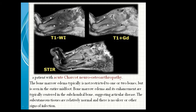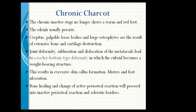The subcutaneous tissues are relatively normal and there is no ulcer or other signs of infection. Chronic Charcot: the chronic inactive stage no longer shows warm and red foot. The edema usually persists. Crepitus, palpable loose bodies, and large osteophytes are the result of extensive bone and cartilage destruction. Joint deformity, subluxation, and dislocation of the metatarsal head lead to a rocker bottom type of deformity in which the cuboid becomes a weight-bearing structure. This results in excessive skin callus formation, blisters, and gut ulceration. Bone healing proceeds into inactive periosteal reaction and sclerotic borders.